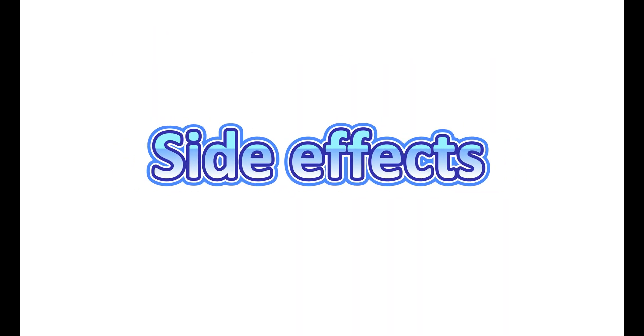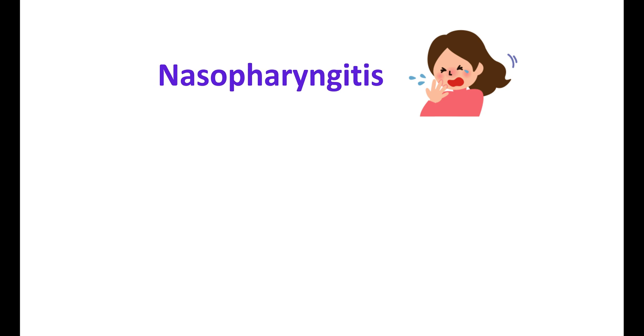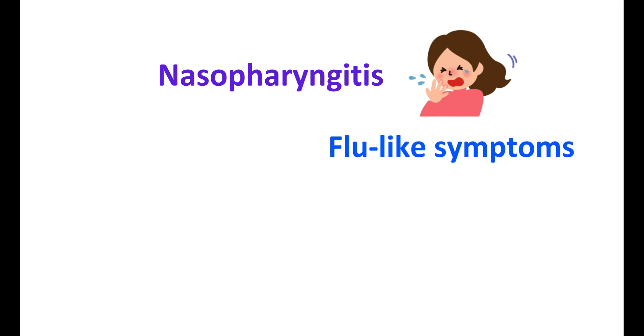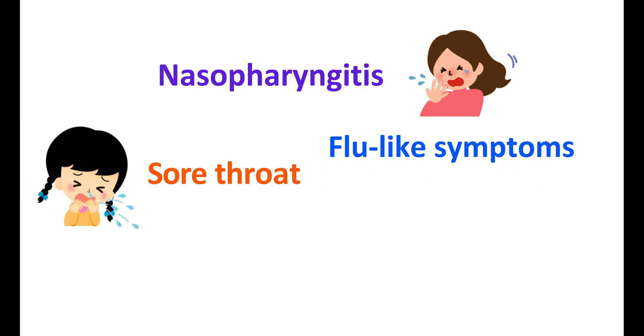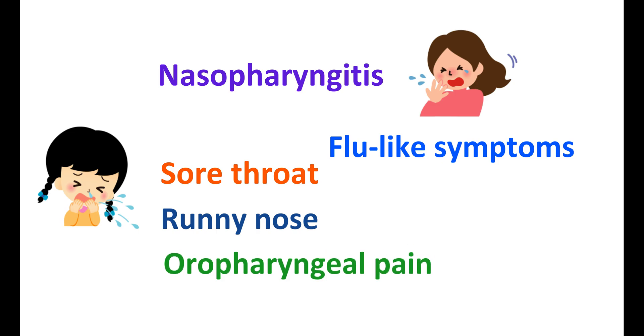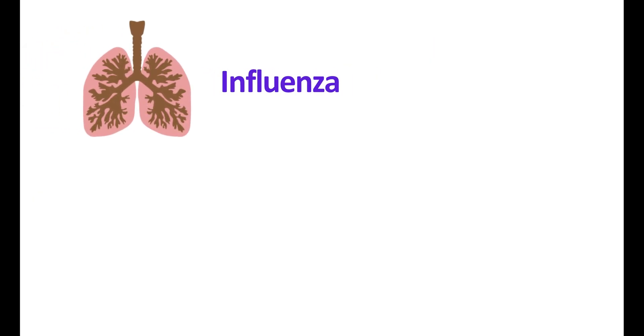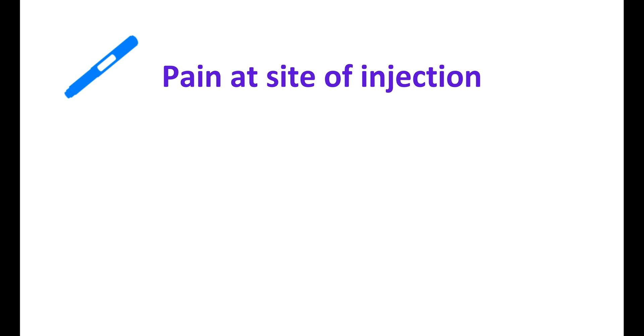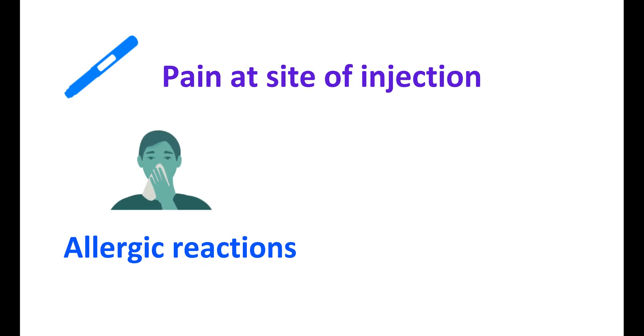Now let us see the side effects of this medication. One of the common side effects of Evolocumab is nasopharyngitis. It can produce inflammation in the nasopharynx and flu-like symptoms, so people may experience sore throat, runny nose, and oropharyngeal pain. It can also produce upper respiratory tract infections like influenza, and in some people back pain as well as muscle pain can be observed. With each dose, pain at the site of injection may occur, and it can also produce allergic reactions like angioedema.